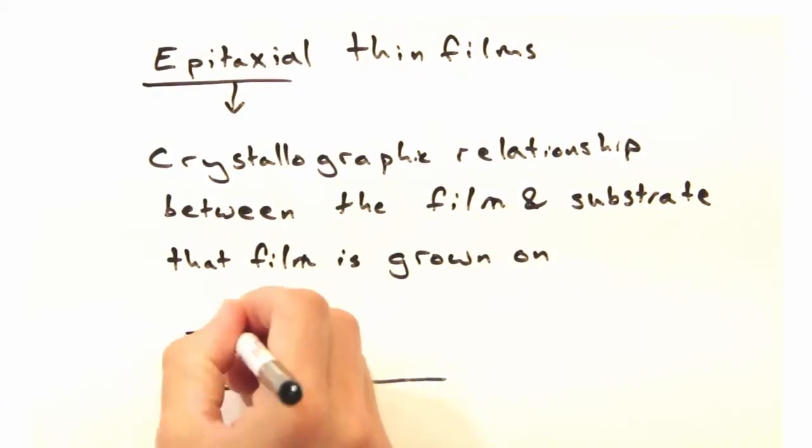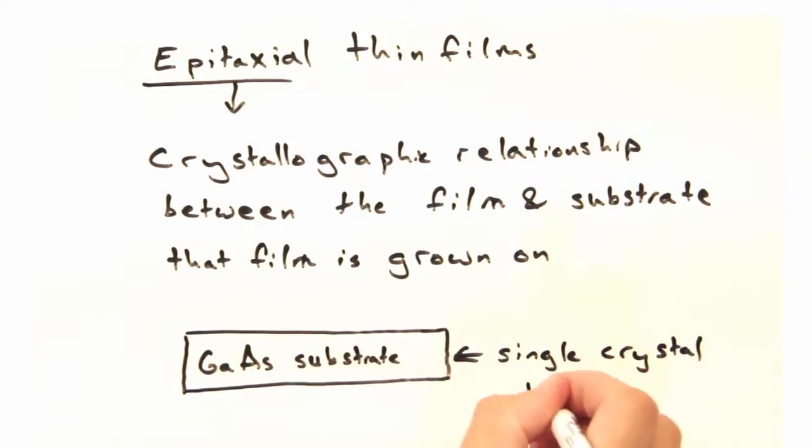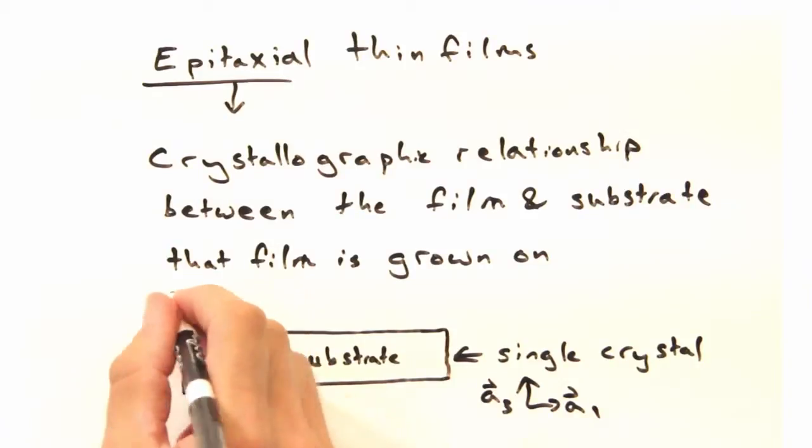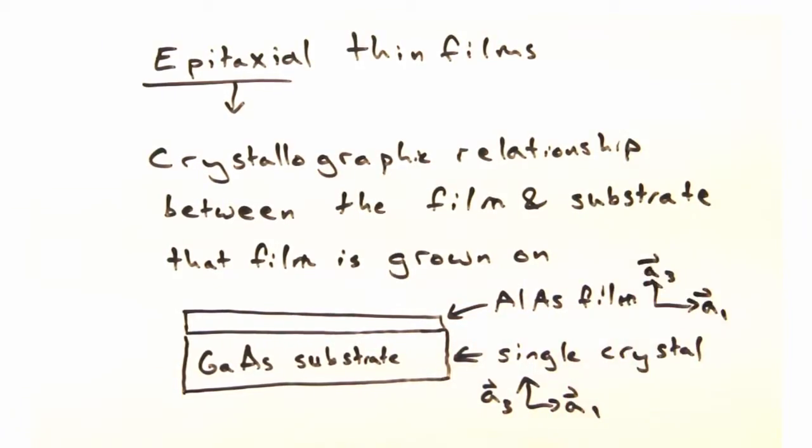So for example, growing aluminum arsenide on gallium arsenide? Exactly. The lattice parameters of the two materials don't match exactly, but they're close and the film lattice is oriented with the substrate lattice.